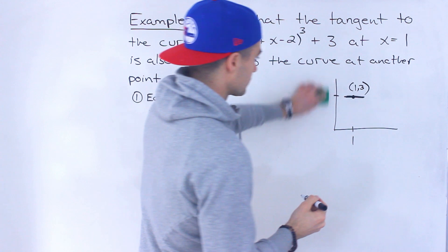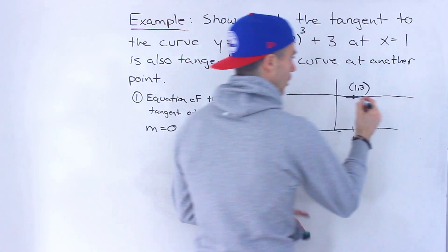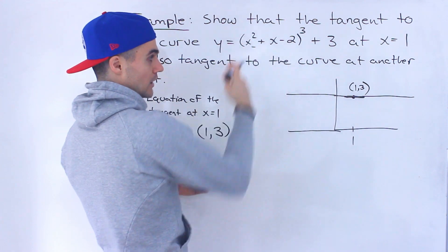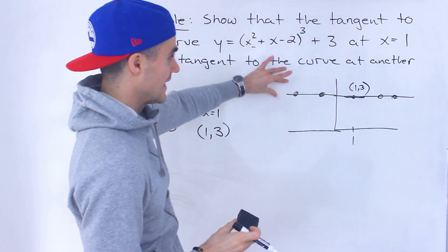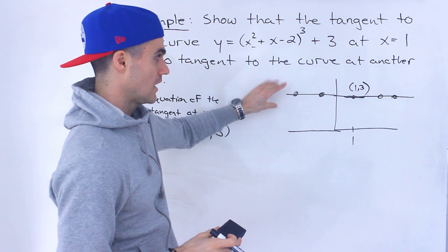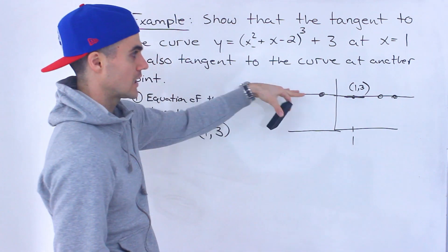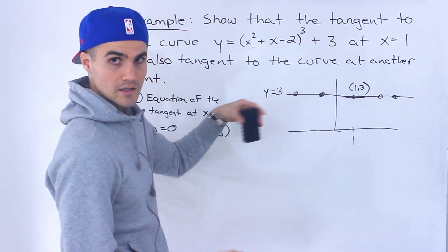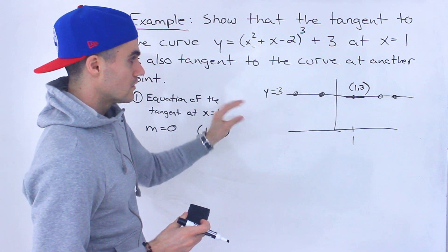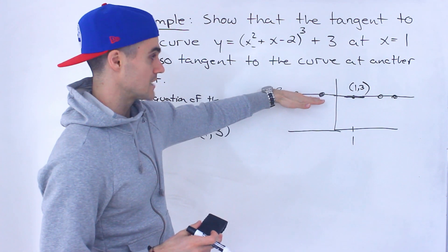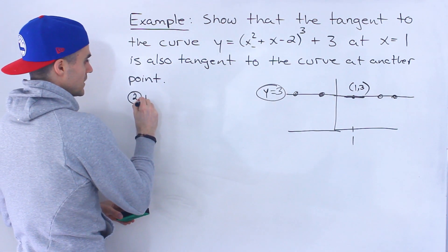What we have to show is that this tangent line, which we can extend, is also the tangent to another point on this curve — whether that point is here or here or wherever it may be. The equation of this horizontal tangent is simply y equals 3, because it's happening at a y value of 3 with a slope of 0.